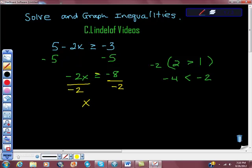We have to switch this inequality. It was greater than or equal to. So we're going to switch that to less than or equal to—I'm sorry, negative 8 over negative 2 is positive 4. So x has to be less than or equal to 4. What does that look like?